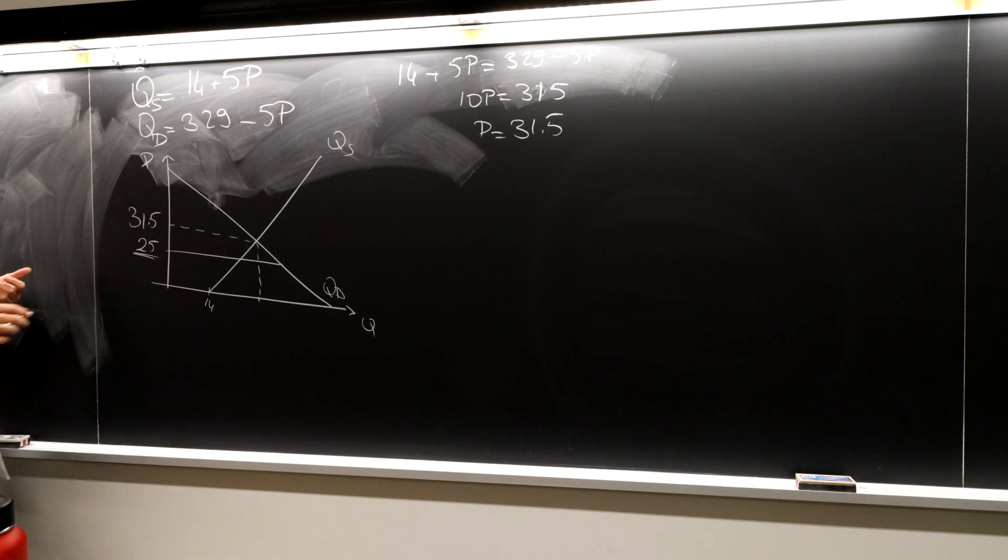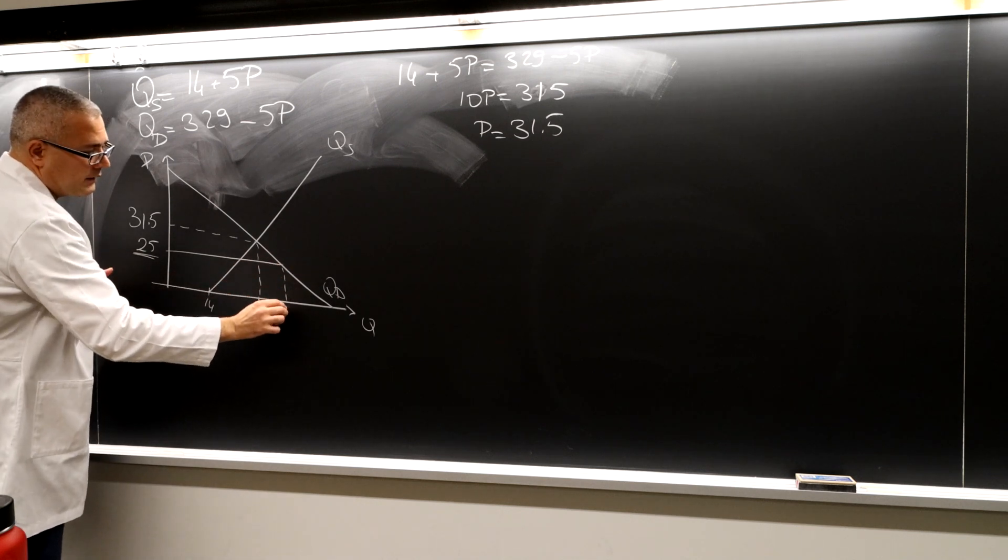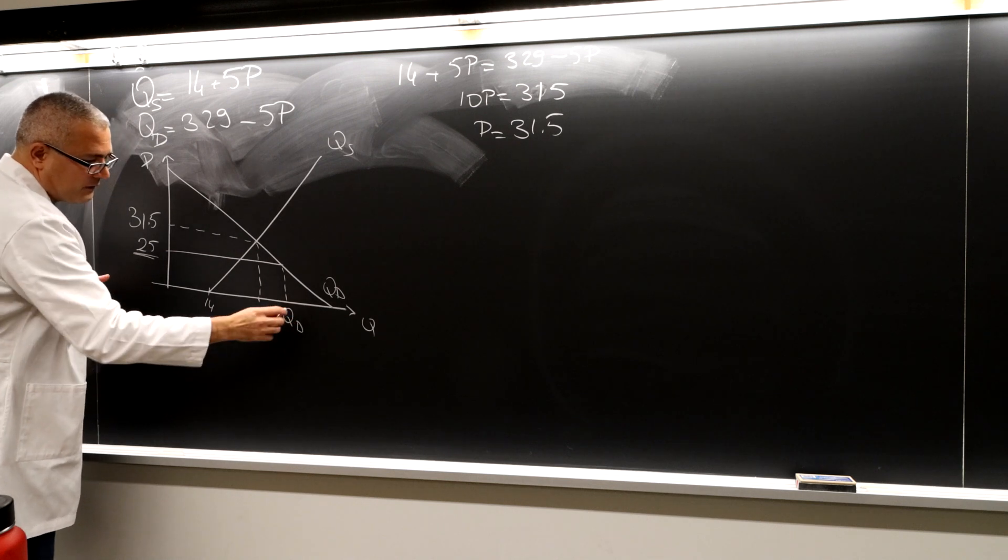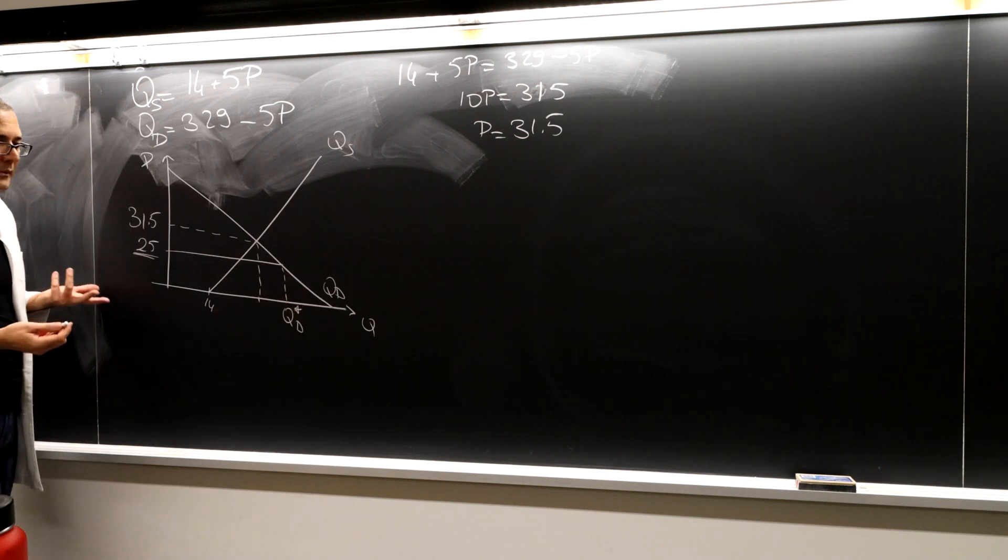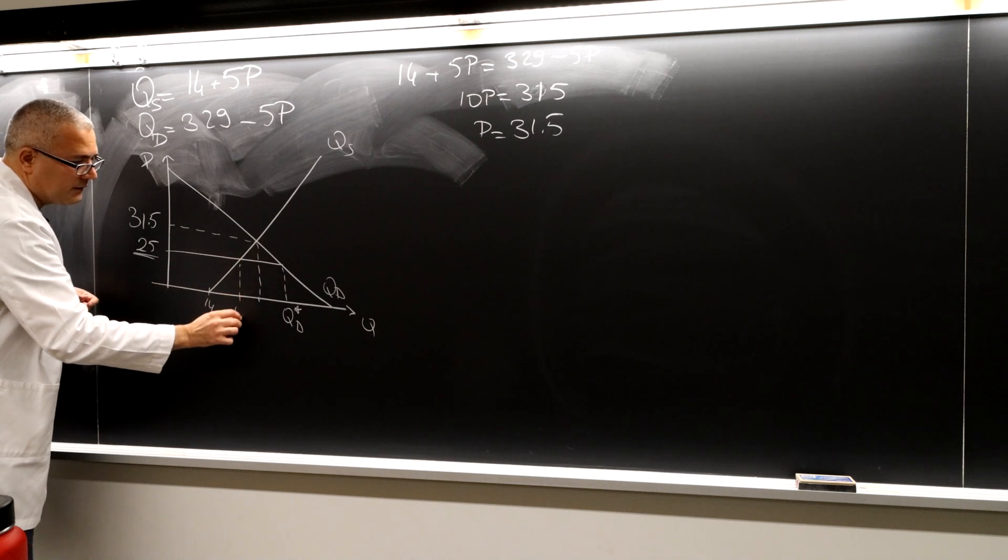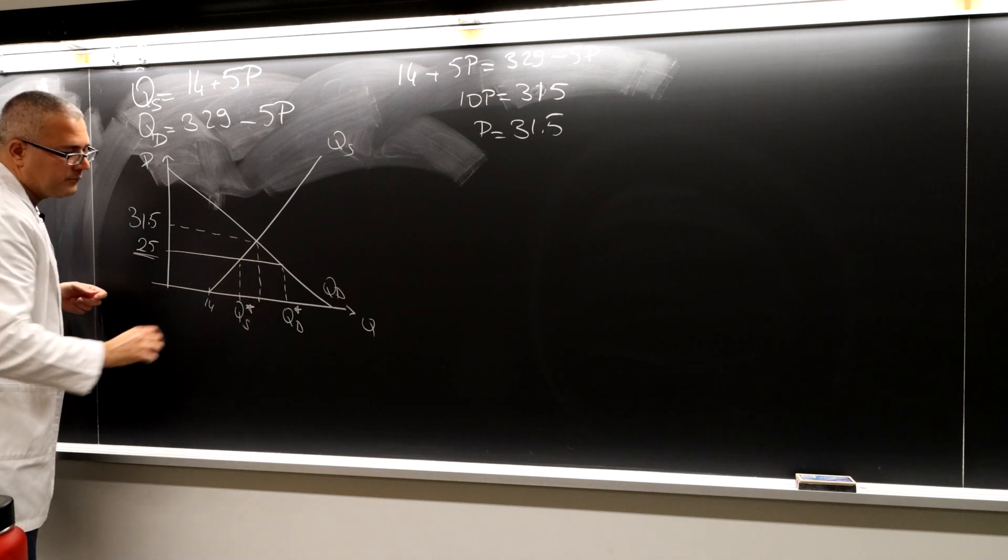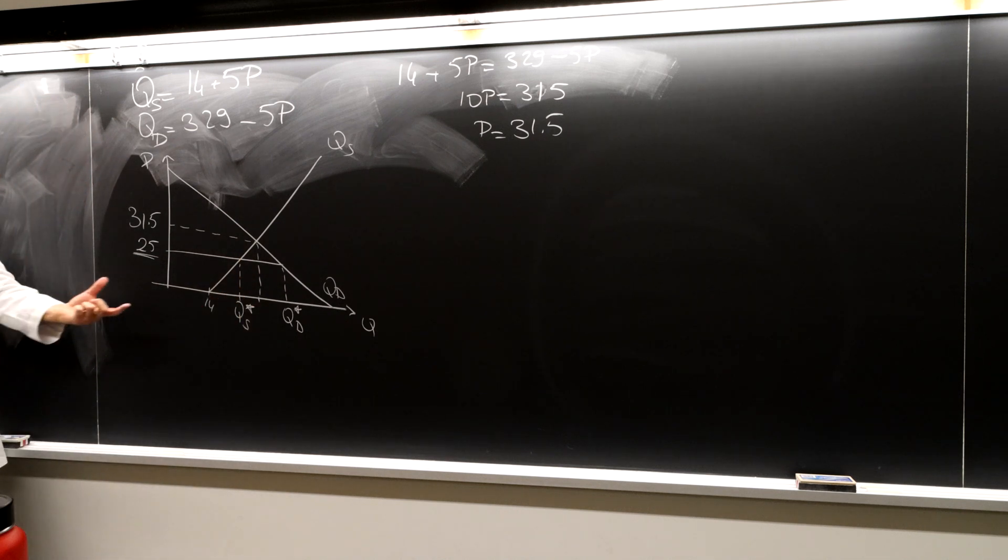Clearly this is going to be quantity demanded at this price. Let's call it Q star D. And this is the supplied quantity. So there's going to be an excess demand.